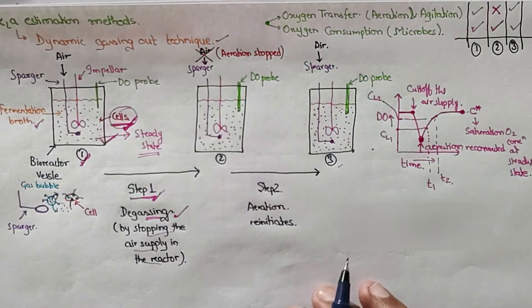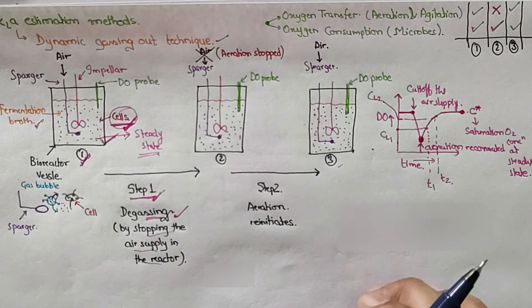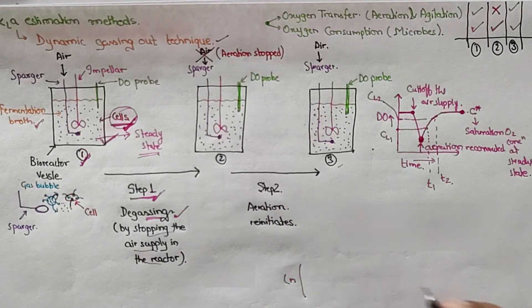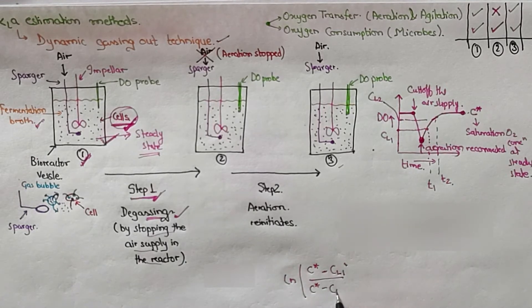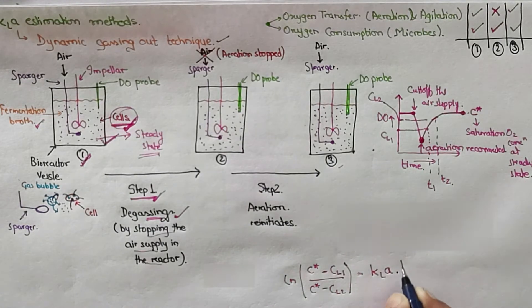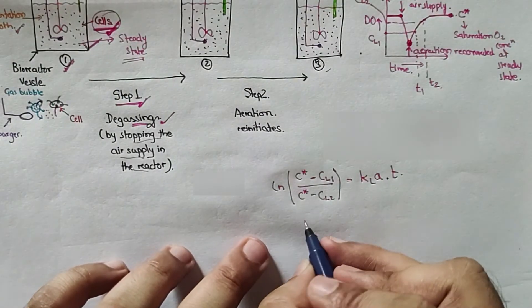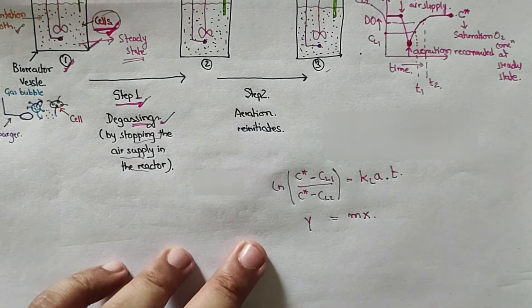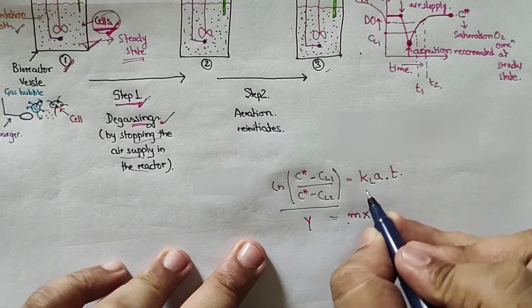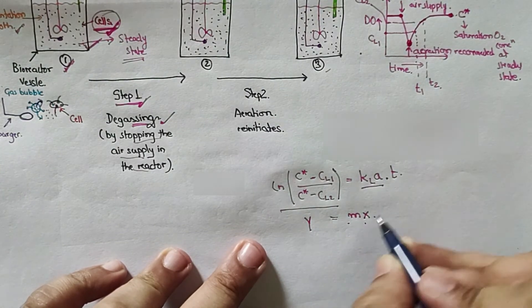The equation that will help you in assessing the KLA value will be given by ln(C* - CL1)/(C* - CL2) = KLA × T. This is a type of Y = Mx kind of equation, so Y is this, M is KLA, and X is time.